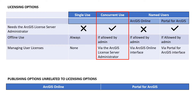Concurrent-use uses a license manager. Essentially, you as the administrator will license all of your licenses on a machine where the ArcGIS License Server Administrator is installed. Your users will then open ArcGIS Pro and point to this machine where the licenses are being held, so you can have people sharing licenses so long as they are not using them at the same time.